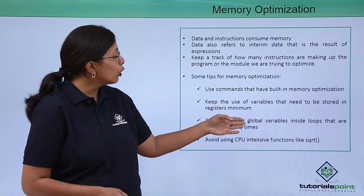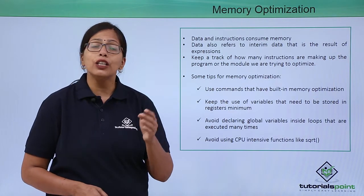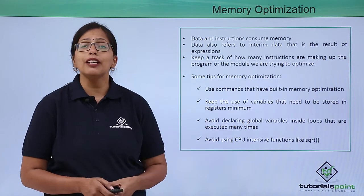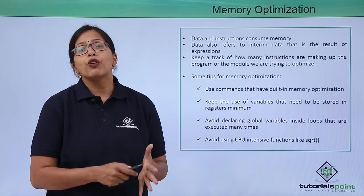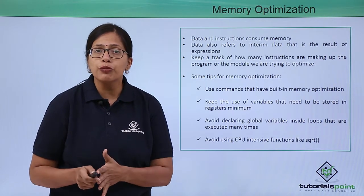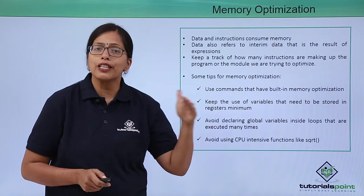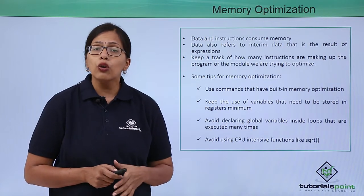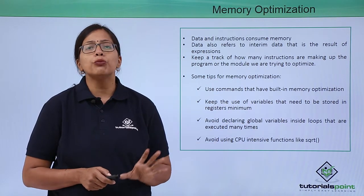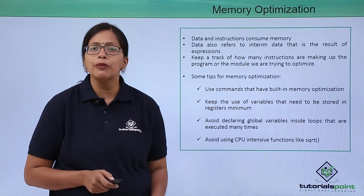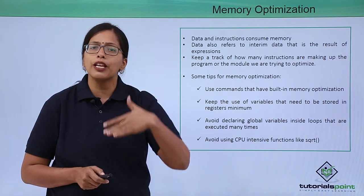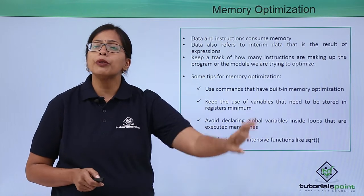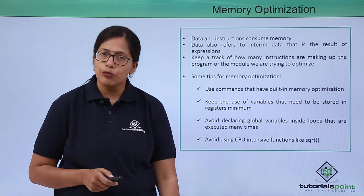Avoid declaring global variables inside loops that are executed many times. Just as you should avoid function calls within loops to reduce execution time, you should avoid declaring global variables inside loops to save memory — because every time the loop executes, the variable is declared again and new memory space has to be allocated.